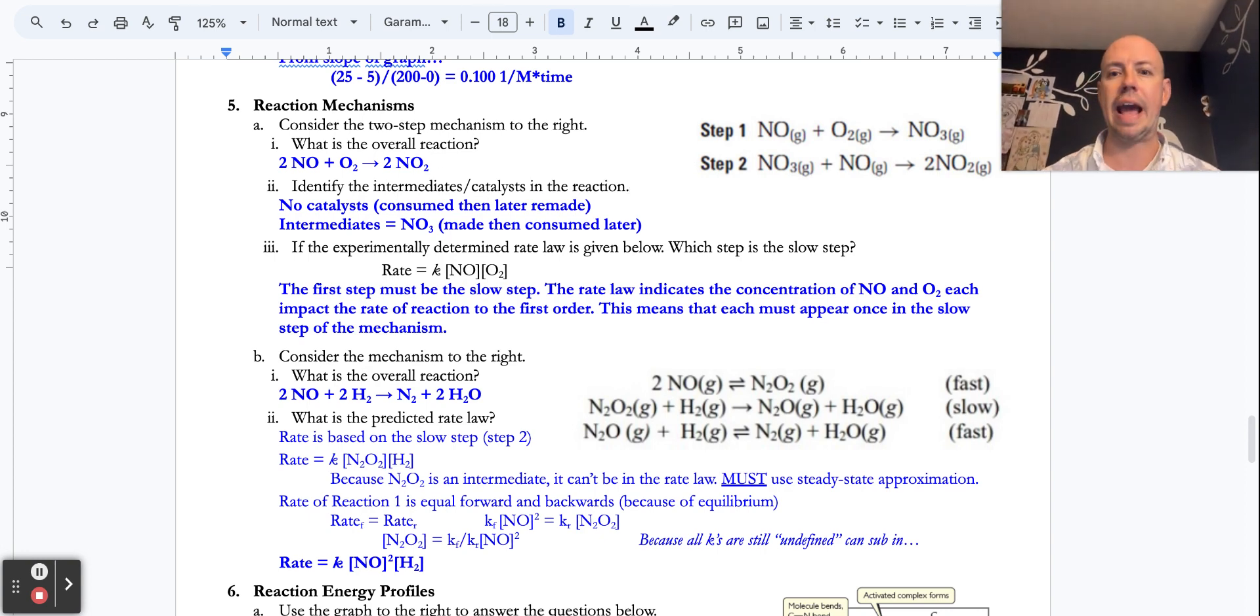In this one, there is no catalyst. A catalyst is defined as something consumed in an early step and remade in a later step. We don't have any of that, but NO3, we already talked about it. We're going to end up crossing it off because it's made in an early step and then later consumed.